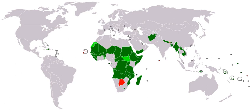Most developing countries have these criteria in common: high levels of poverty, measured based on GNI per capita averaged over three years — for example, if the GNI per capita is less than U.S. $1,025 as of 2018, the country is regarded as a least developed country. Human resource weakness based on indicators of nutrition, health, education and adult literacy, for example low literacy levels.